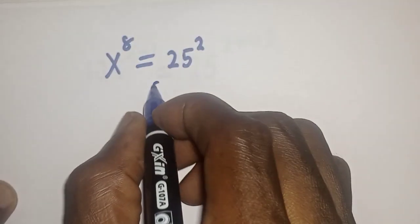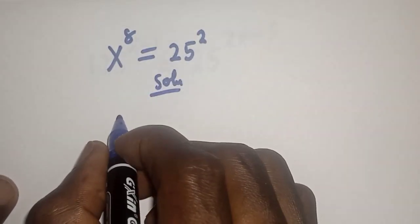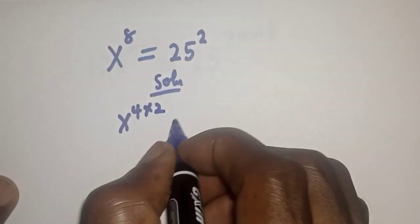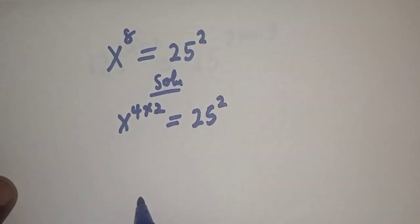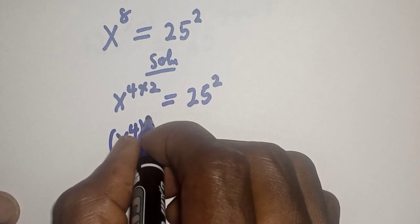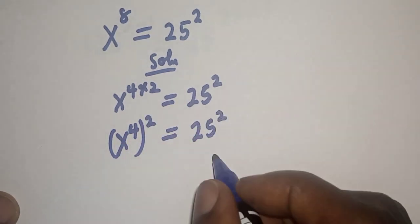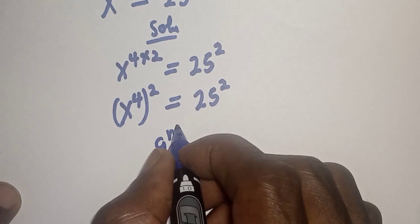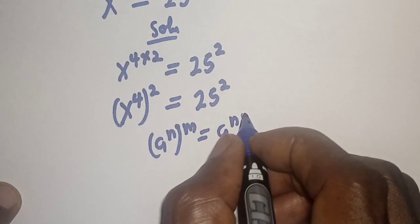Like, share, comment, and subscribe. Solution: S raised to power 8 can be written as S raised to power 4 multiplied by 2, which is equal to 25 square. And this can be written as S raised to power 4, all squared, is equal to 25 square. Take note of this exponential rule: A raised to power N, to the power of M, is equal to A raised to power N times M.